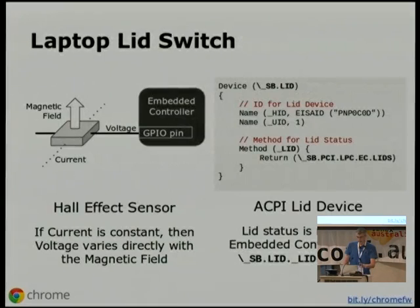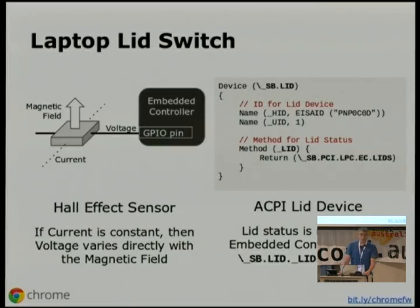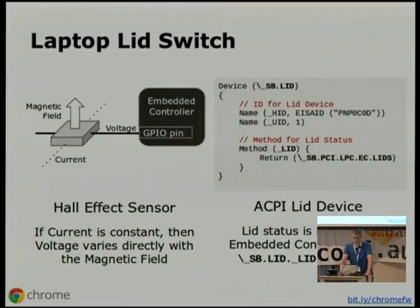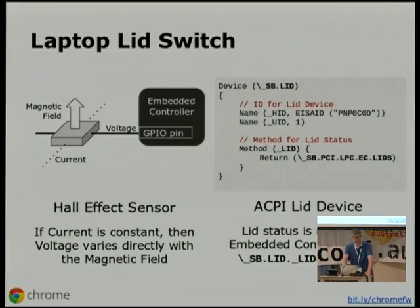Where does the lid state come from? A laptop lid is a pretty simple Hall effect sensor — the voltage output changes based on a magnet placed next to or removed from the sensor itself. That voltage is connected to a GPIO pin on the embedded controller. When the state changes, the embedded controller can get an interrupt and decide how to service it. Describing the lid to the OS is done in ACPI — you've got a magic identifier so the kernel knows this is a lid device, and a predefined magic method called _LID that returns a value of zero or one indicating whether the lid is open or closed. In this case, it goes and queries the embedded controller to find out the current state of the lid switch.